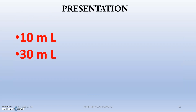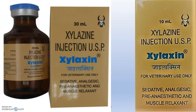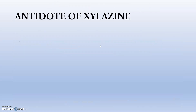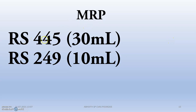The brand presentation is available in 10 ml and 30 ml vials, with each ml containing approximately 20 mg of Xylacine. Storage requires a cool and dry place. This 30 ml vial is Xylacine injection for veterinary use only, indicated as a sedative, analgesic, pre-anesthetic, and muscle relaxant, with 23.32 mg per ml. The MRP for the 30 ml vial is Rs. 445 and for the 10 ml vial is Rs. 249.